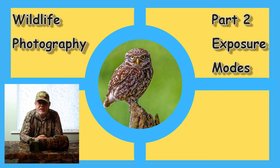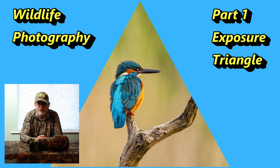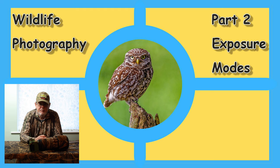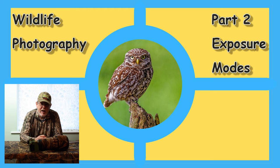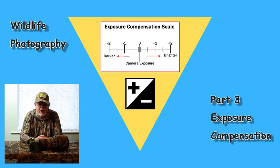To summarise so far in this three-part series on wildlife photography and exposure settings: in part one we looked at the exposure triangle and the relationship between aperture, shutter speed and ISO. In this part two, we've looked at the different exposure modes — through the light meter and the camera modes — and we've looked at the histogram and blinkies, which allow us to adjust our exposures. That leads us into part three, which is going to be about exposure compensation.